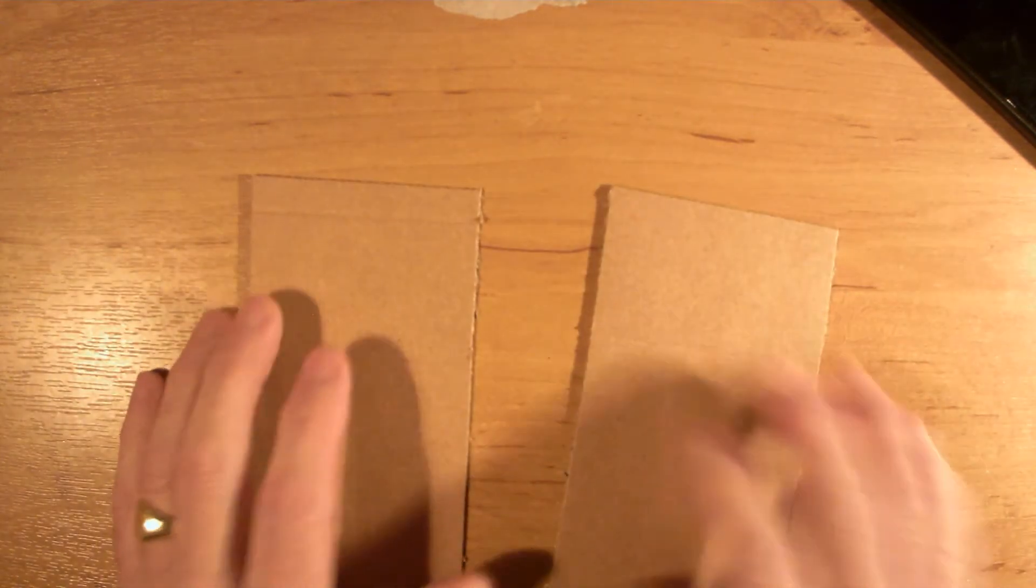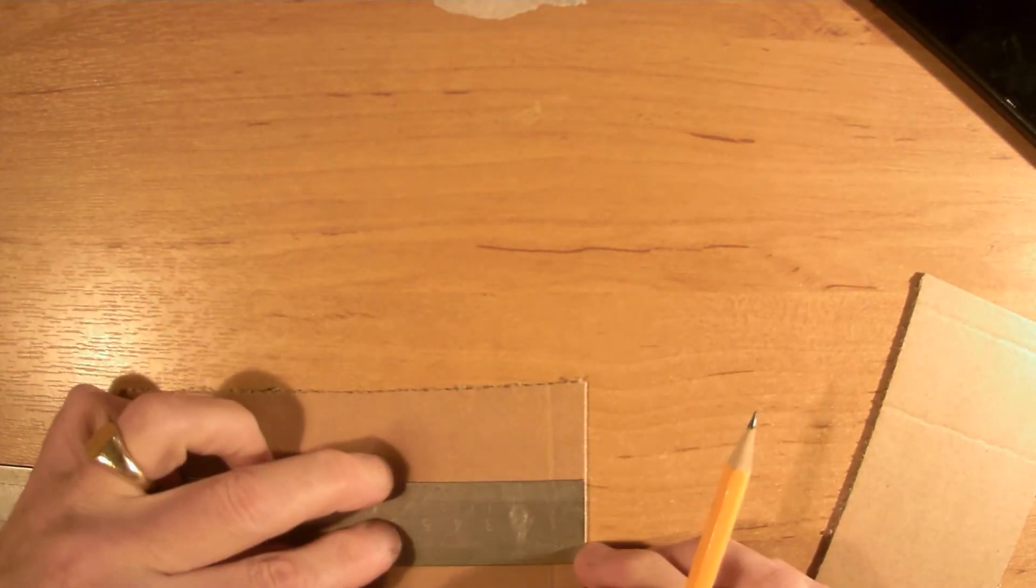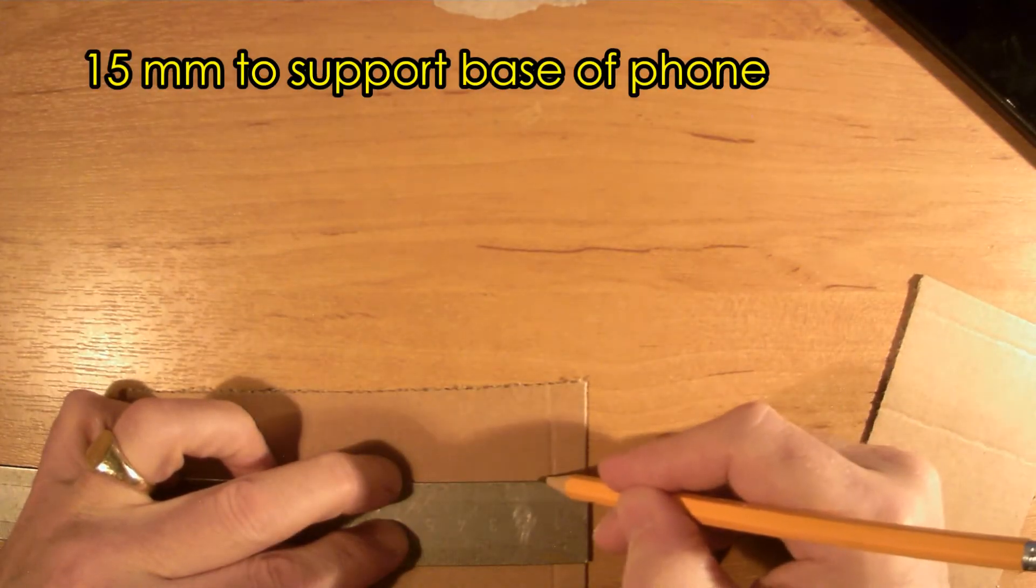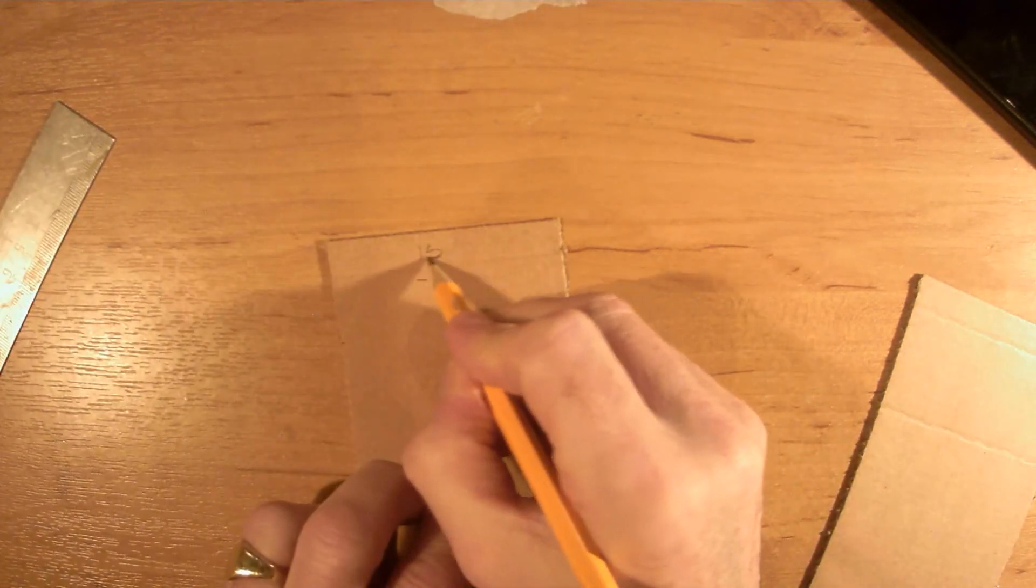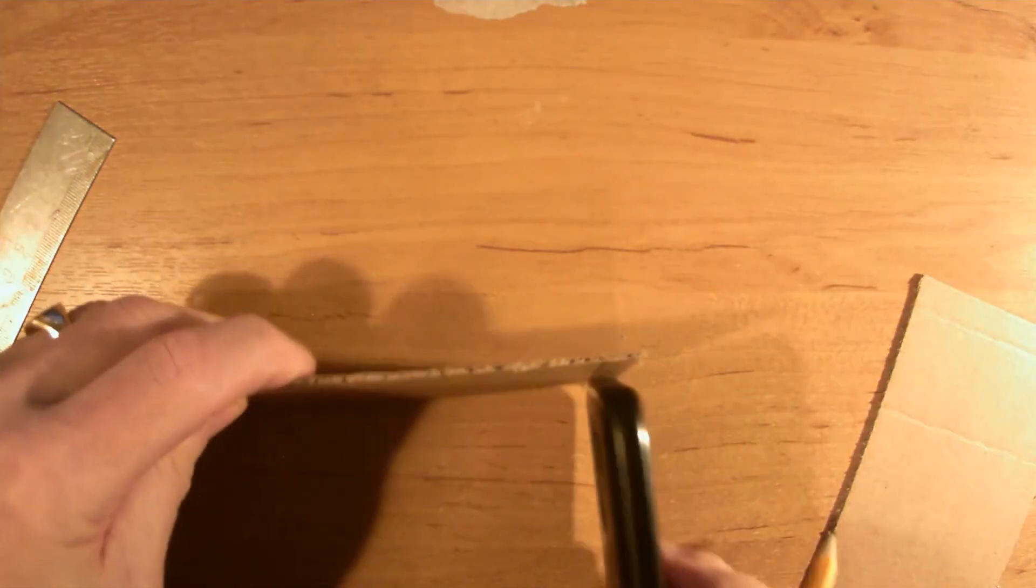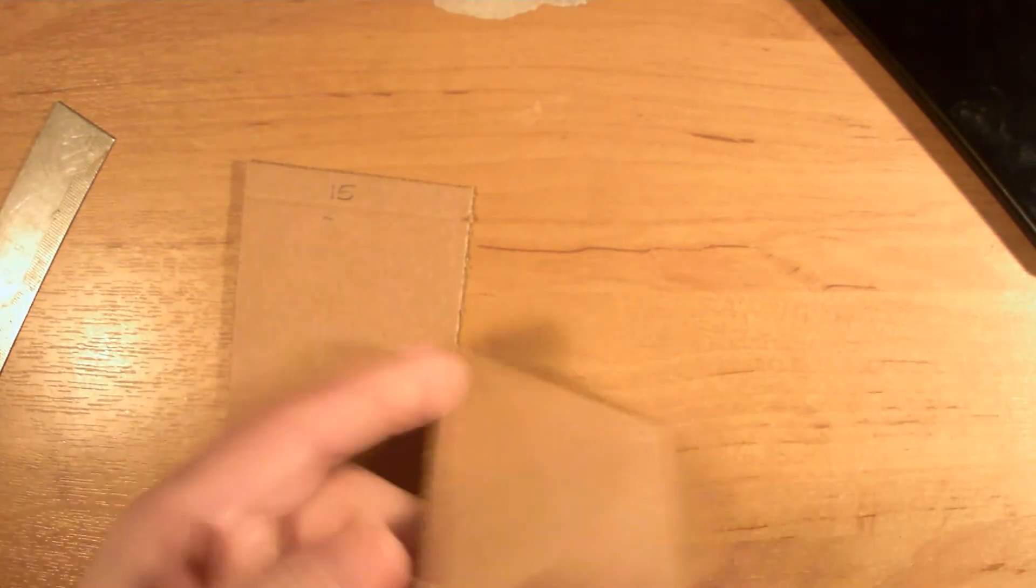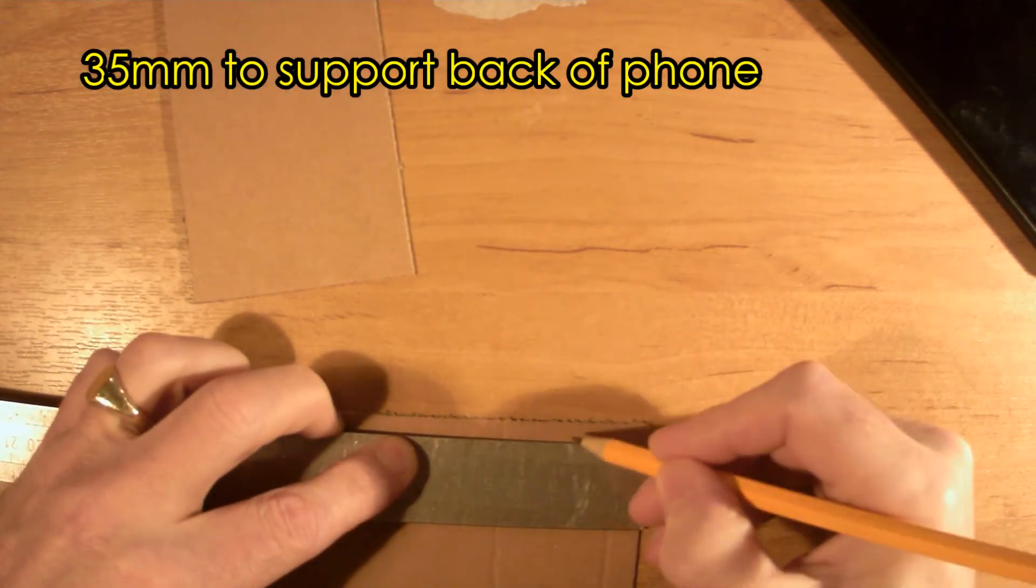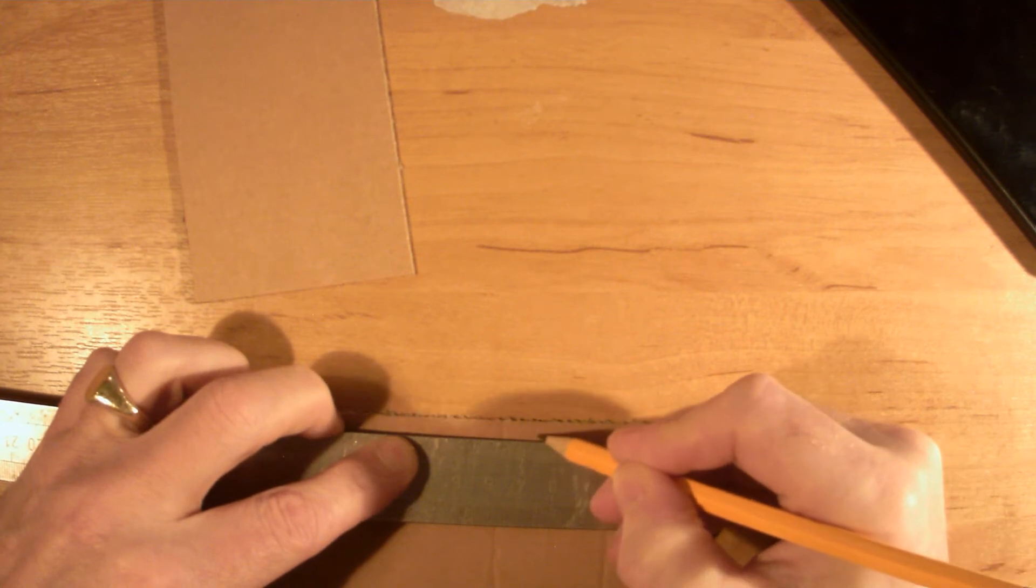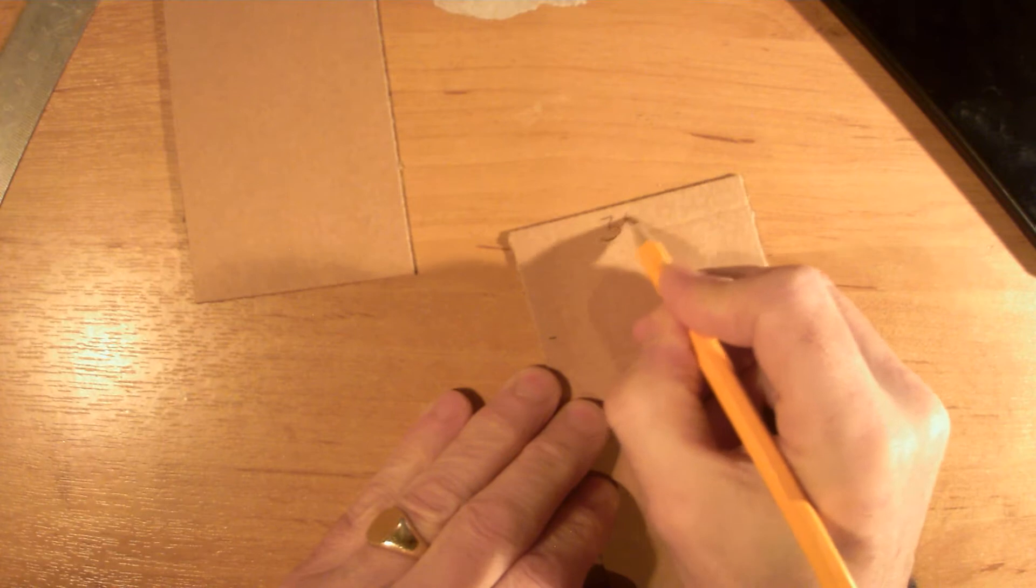From experience and using these at school, I've decided with my particular phone that I need a ledge of about 15 millimetres sticking out of the front to support my phone, and for the leg sticking down anywhere between 30 and 40. So I tend to go for 35, and I'm just writing those on the card so you've got the dimensions.